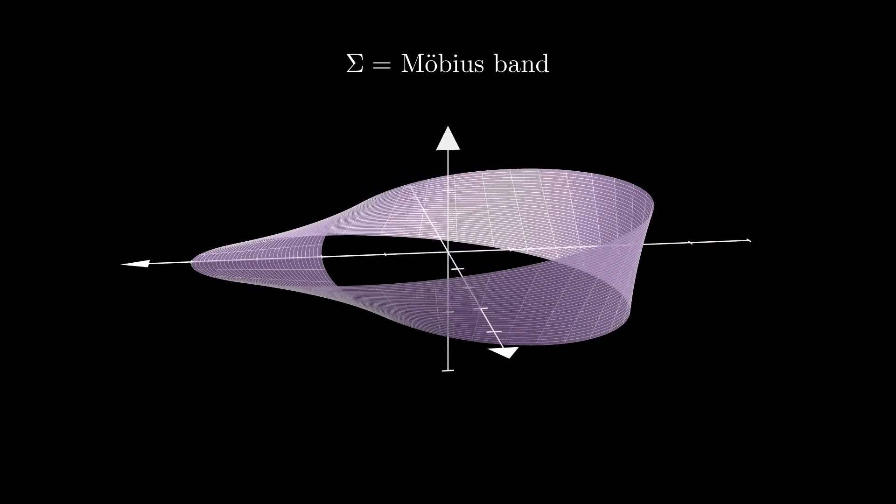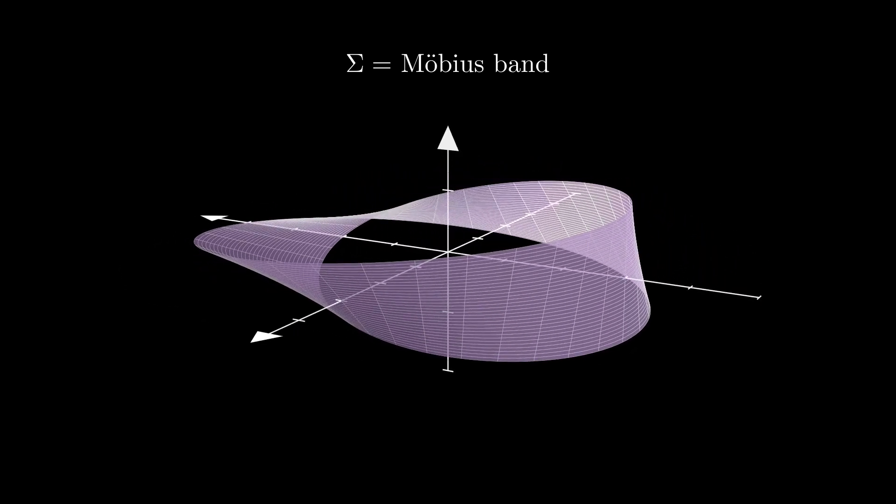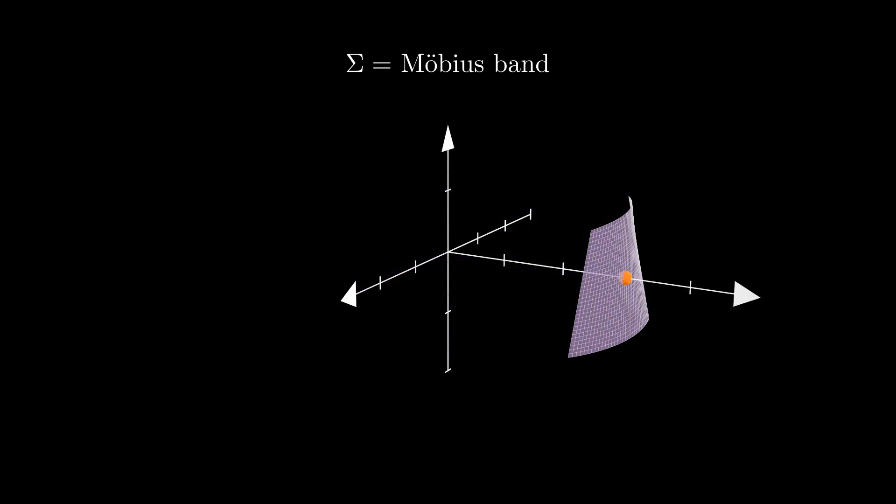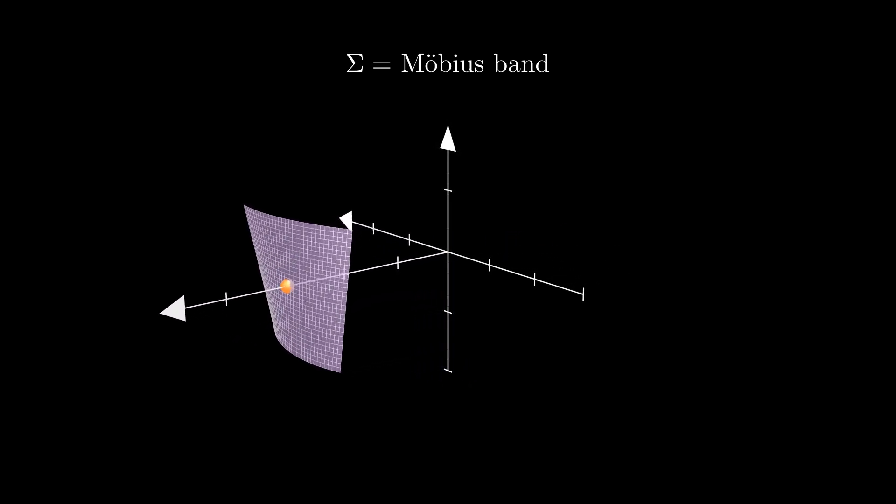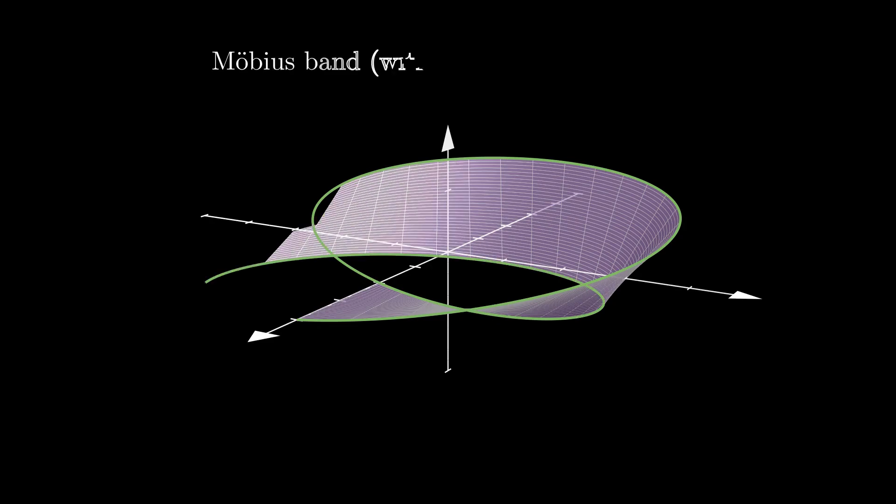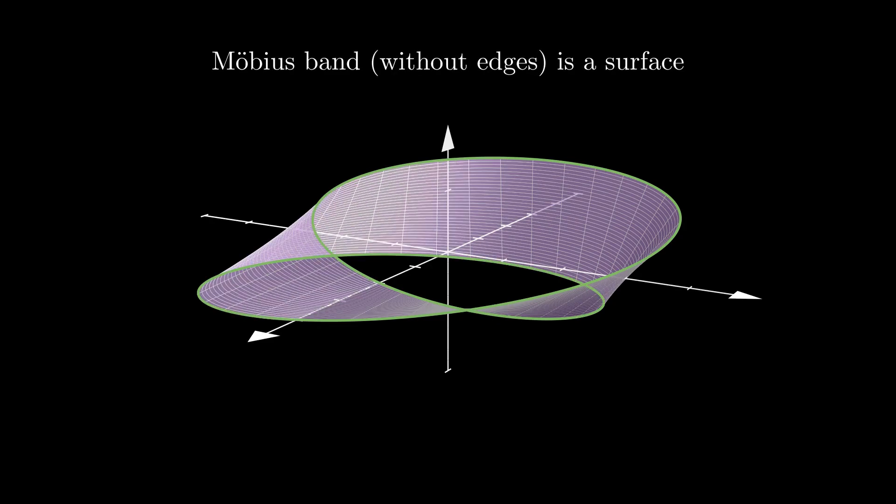Another example of a smooth surface that is not a graph is the Möbius band, obtained by gluing the two ends of a rectangular strip after flipping one of those ends by 180 degrees. Notice that the strip that we consider in here does not include its edges, because if it did, it wouldn't be a smooth surface just like the closed disk in the plane.